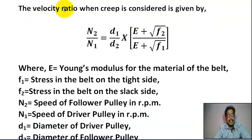The velocity ratio when creep is considered is given by N2/N1 = (d1/d2) × [(E + √f2)/(E + √f1)], where E equals Young's modulus for the material of the belt.